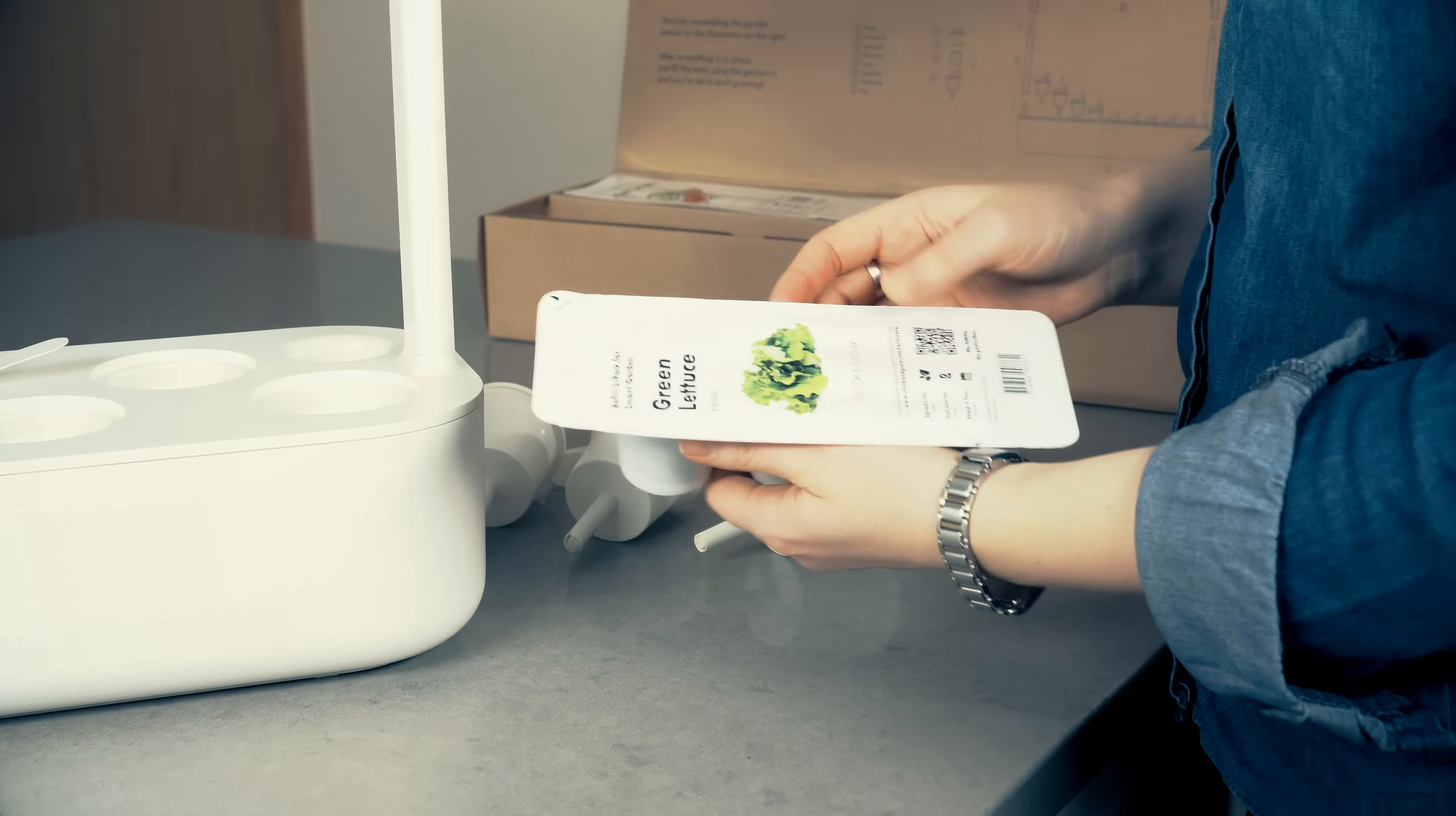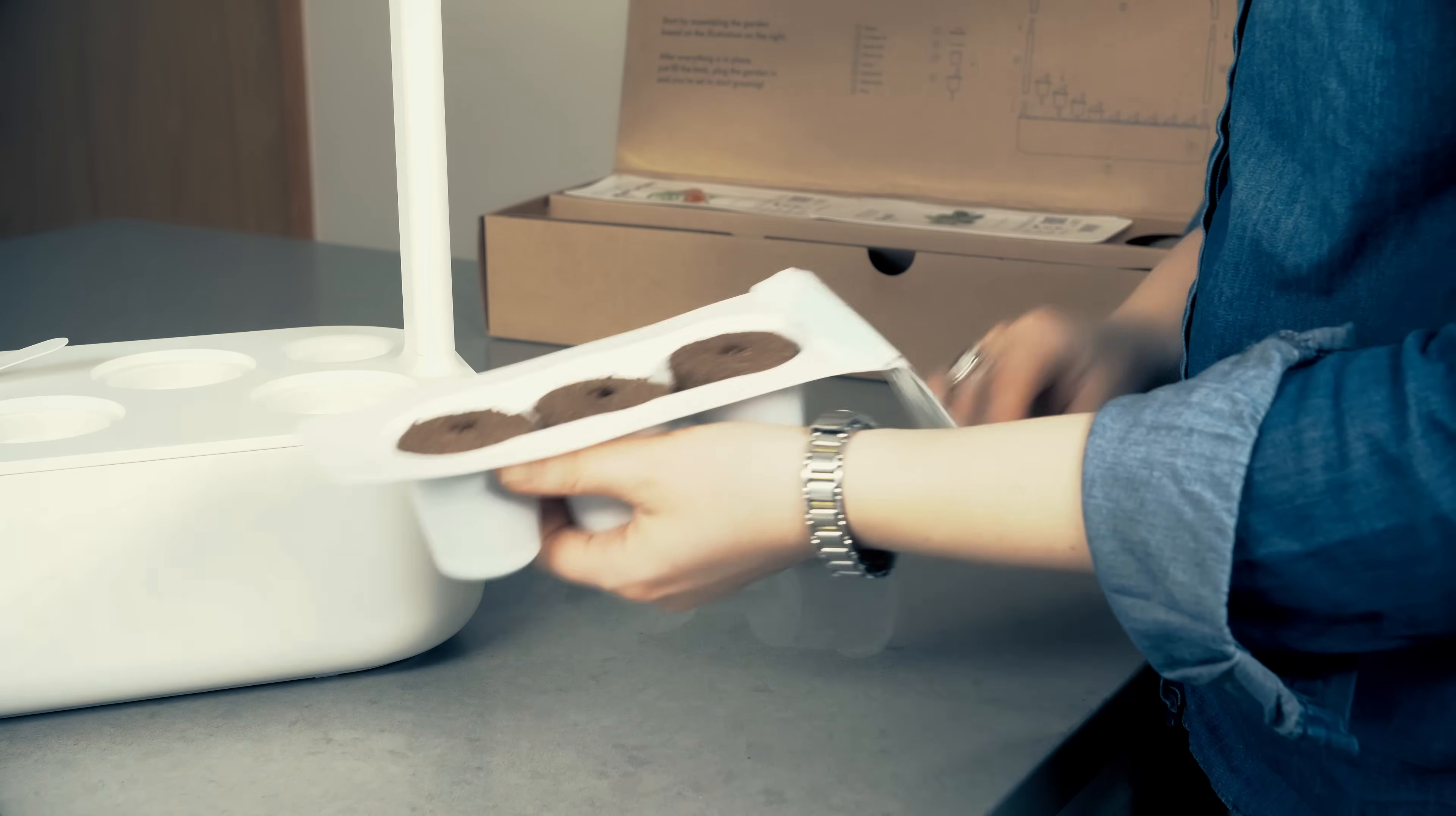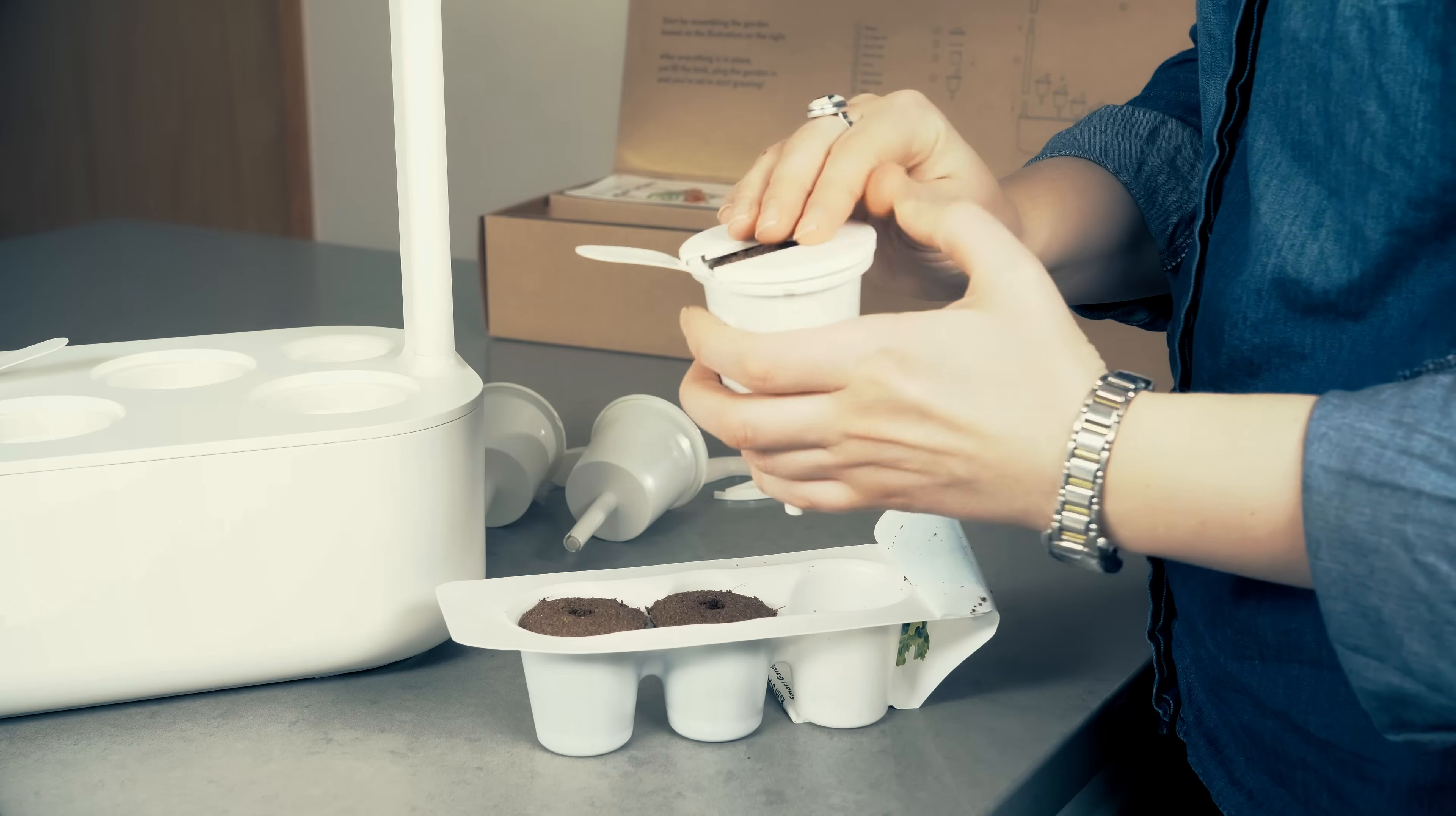Remove the pods from their package and insert them into the plant cups. Then click the plant cups and U-shaped lids back in place.